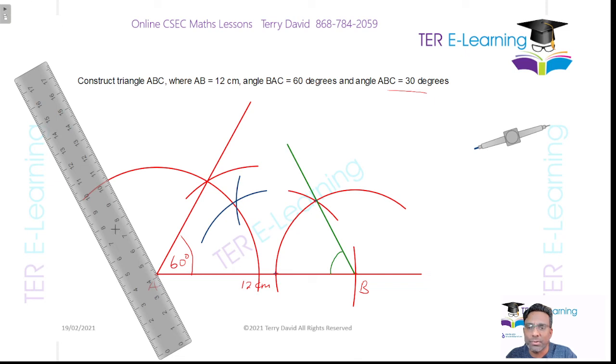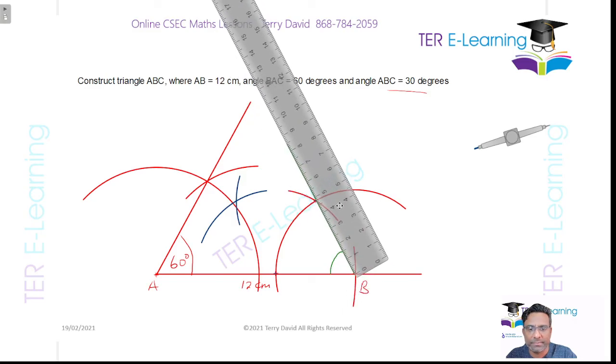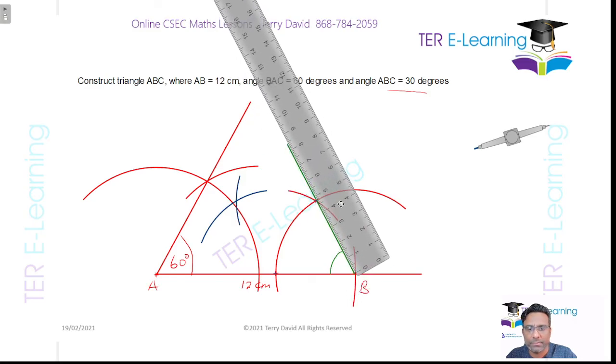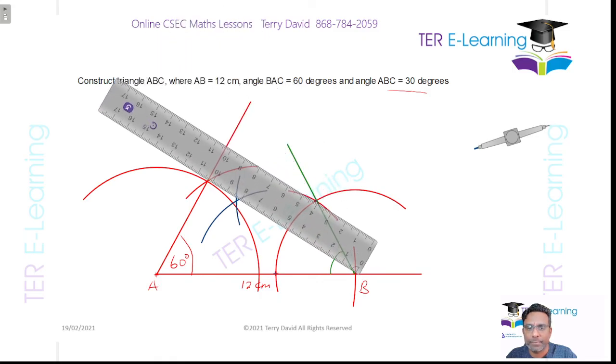Now what I'm going to do, I'm going to draw a line from B. So this is where B is. We're going to draw a line from here, from the point B, in order to locate where the point C is.